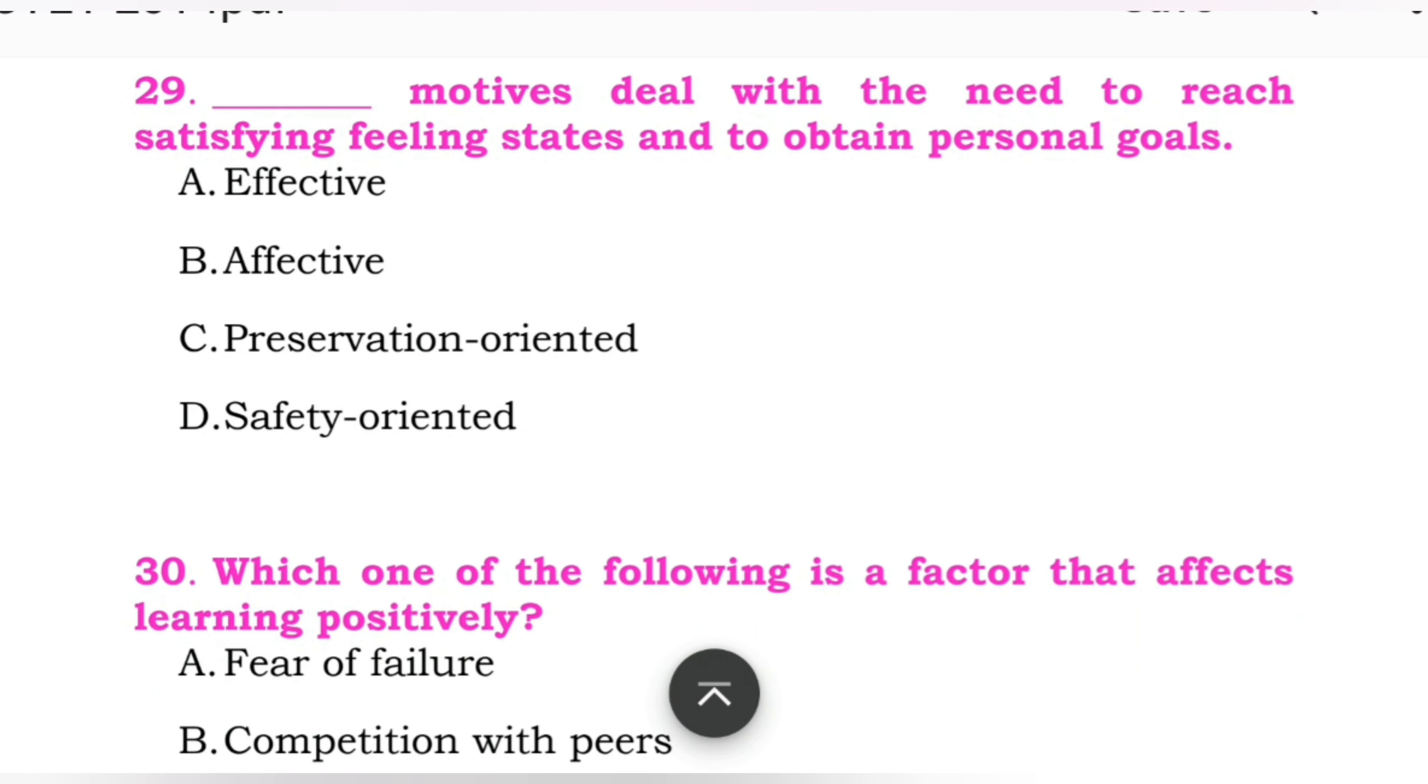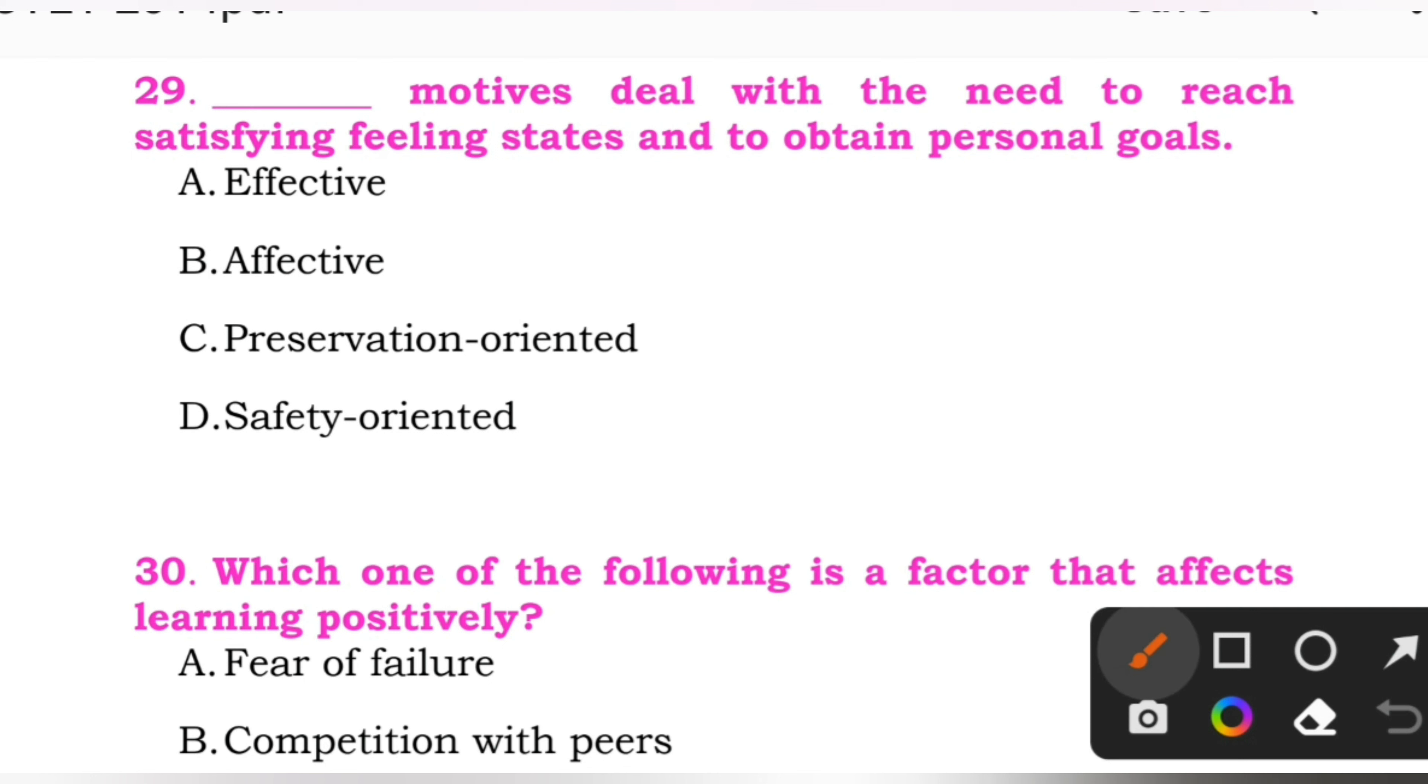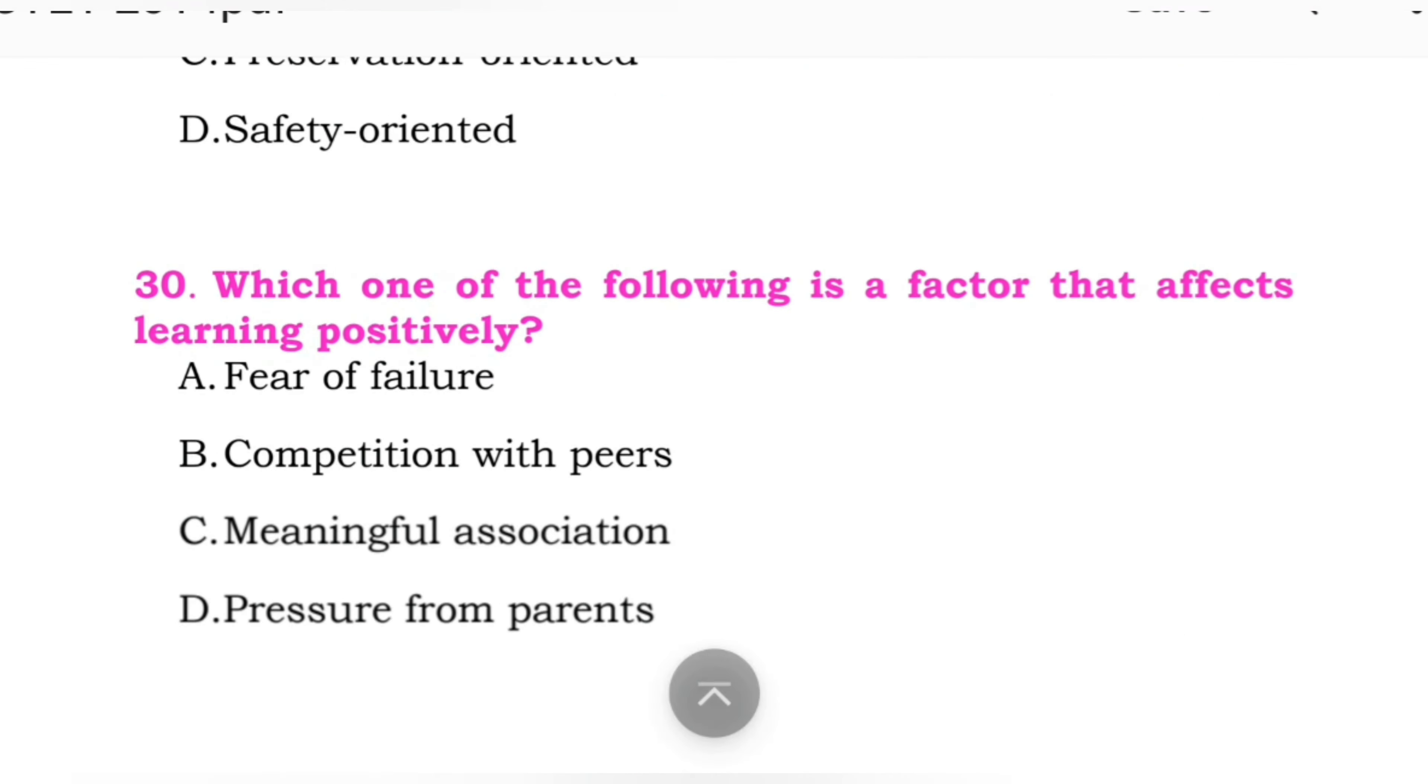Question number 29: Blank motives deal with the need to reach satisfying feeling states and to obtain personal goals. Options: A: effective. B: affective. C: preservation oriented. D: safety oriented. Here the right answer is B, affective.